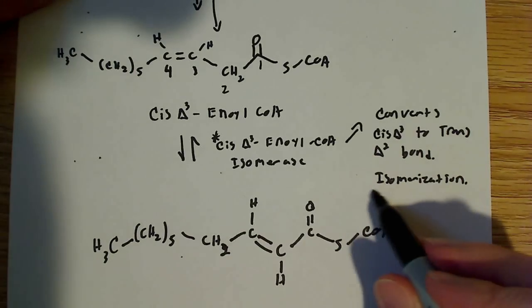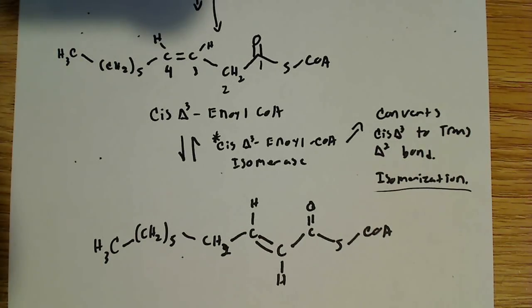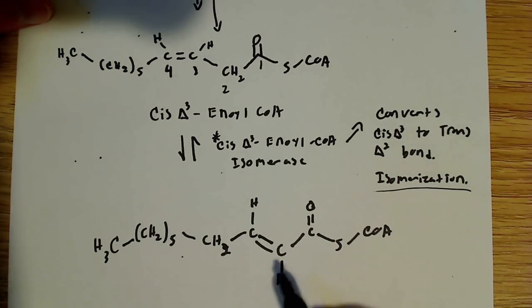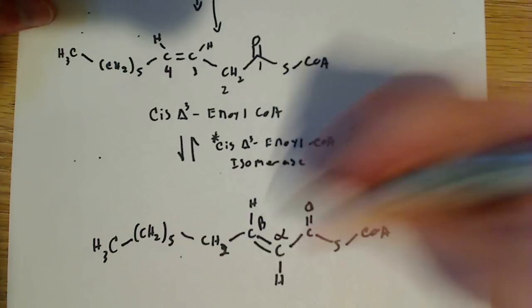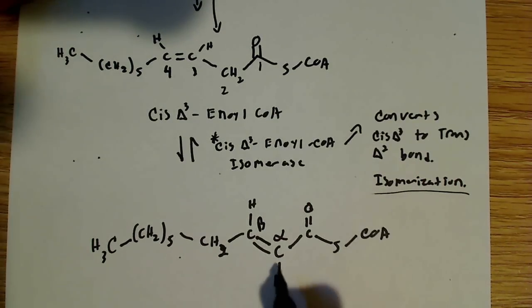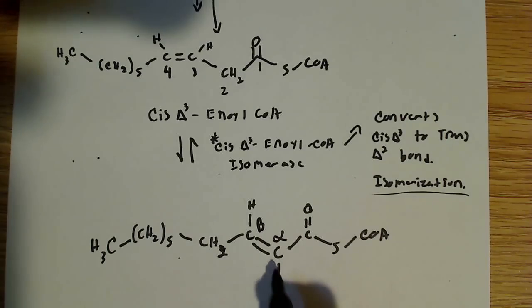And it's an isomerization, hence the word isomerase, as for the, on the end of the enzyme name. So here you go, again, look, alpha carbon, beta carbon. Again, we're back to those same two carbons, and now we have this trans double bond here.